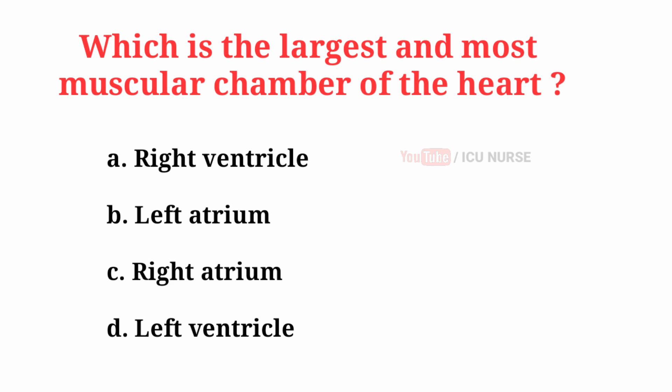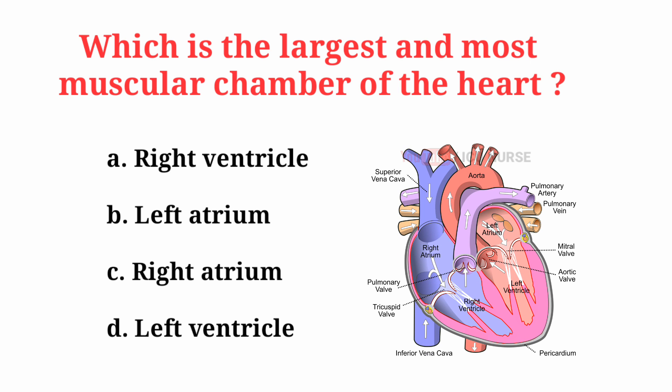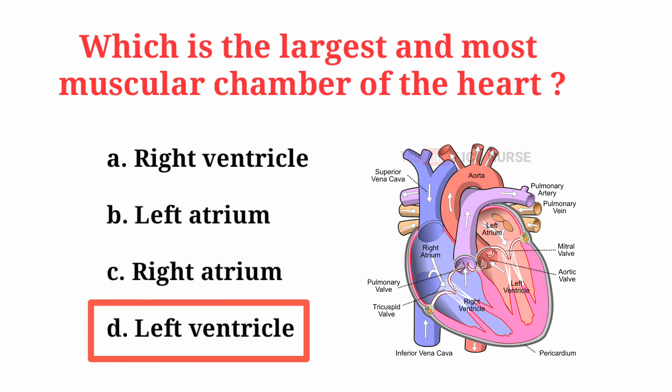Which is the largest and most muscular chamber of the heart? The correct answer is D: Left ventricle.